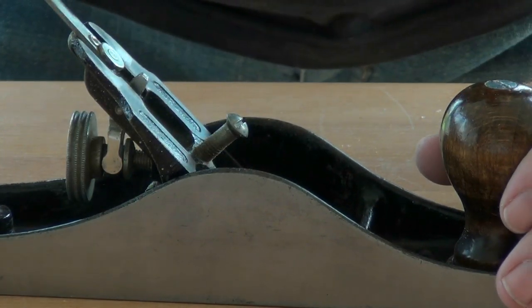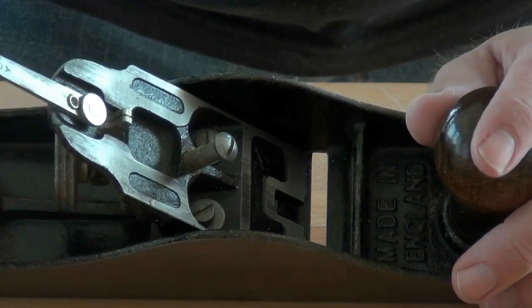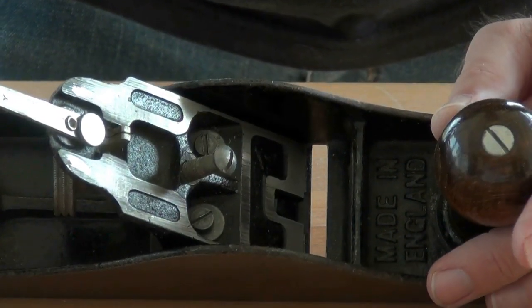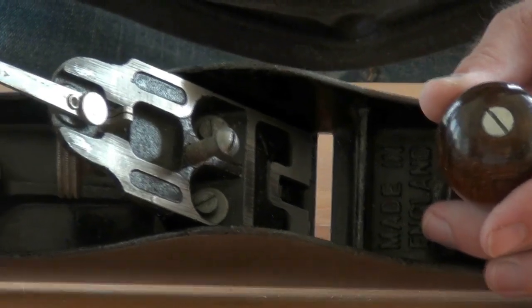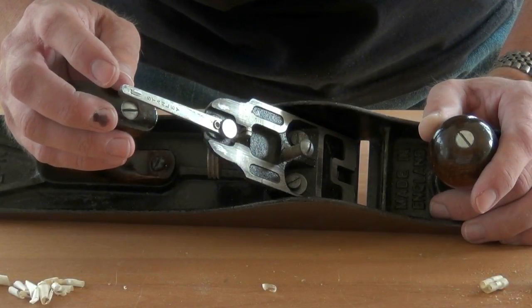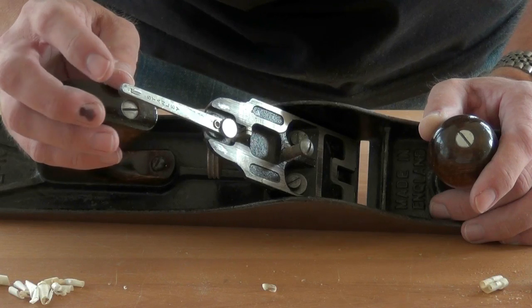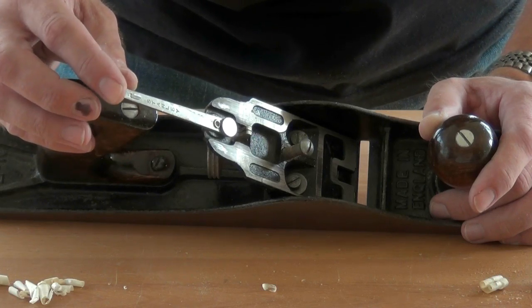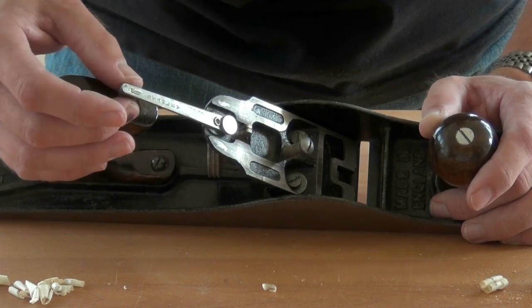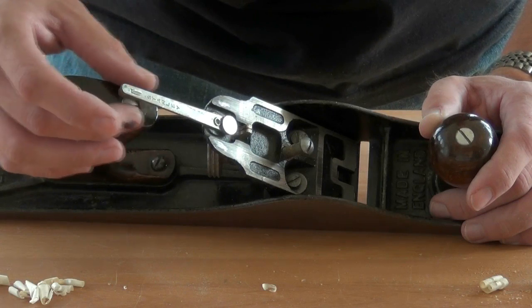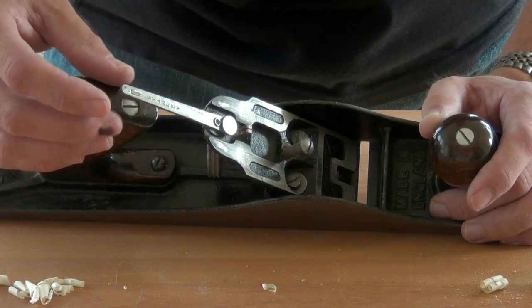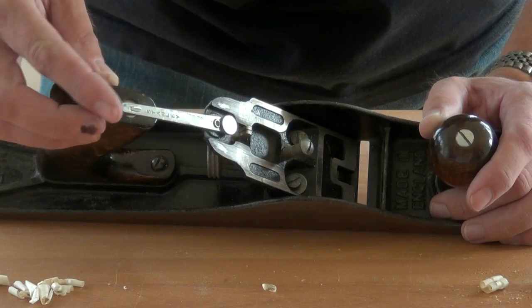Tighten up those screws, pop the blade back in, and check the lateral adjustment on the blade. What we're aiming for is the blade to be parallel in the mouth when the lateral adjustment lever is sitting over the middle of the rear handle. That will allow us good adjustment either way.